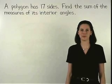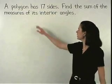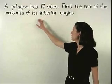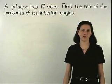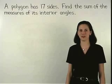In this problem, we're given that a polygon has 17 sides and we're asked to find the sum of the measures of its interior angles.